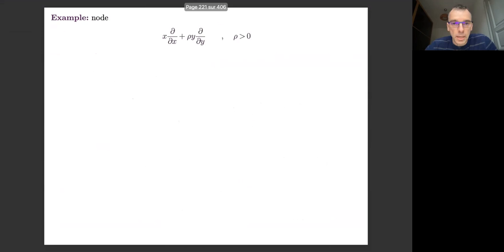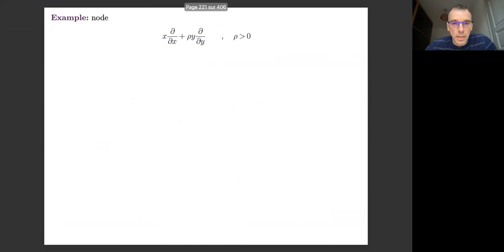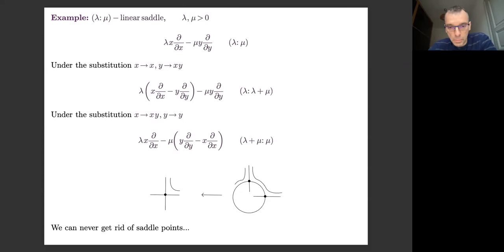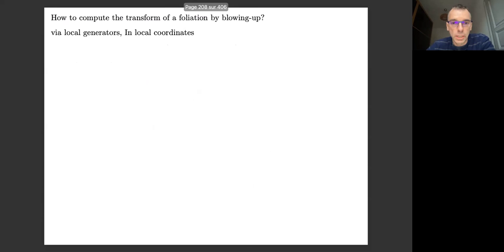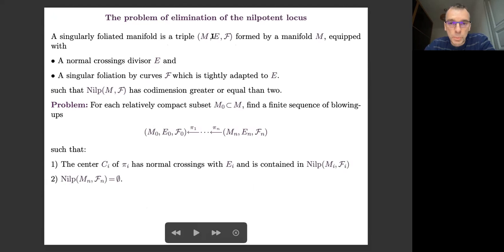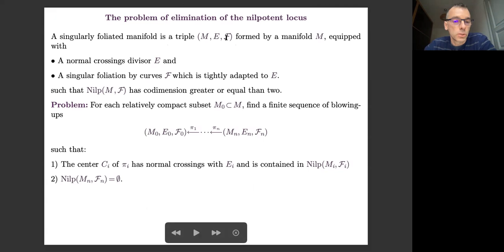Last time we talked about this problem of elimination of nilpotent points for foliation by curves. I recall that you have this triple that I call the singular foliated manifold: a manifold equipped with a normal crossing divisor and a foliation by curves, which of course can contain singularities. I suppose that the foliation is everywhere tangent to this divisor, and moreover, that the nilpotent locus of the foliation is of dimension greater than two.